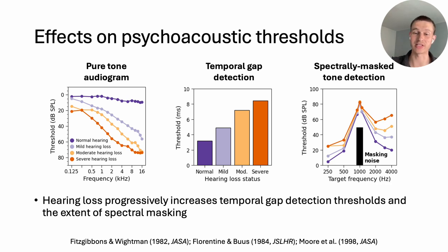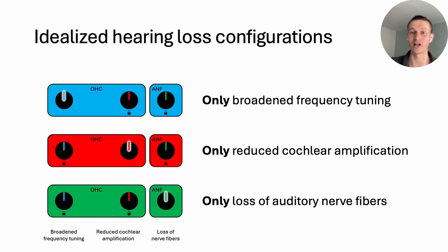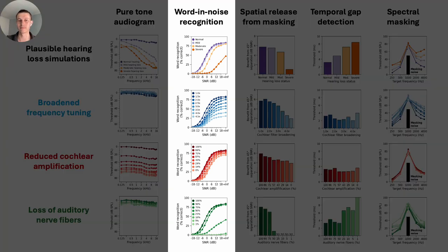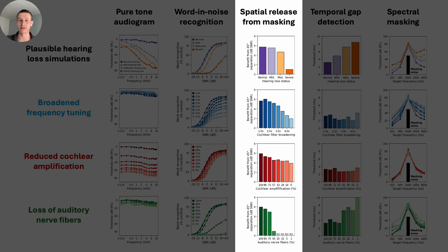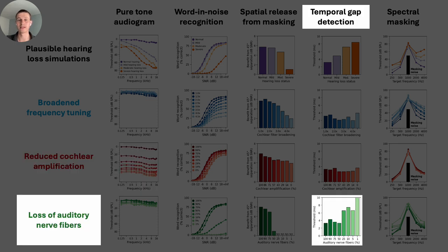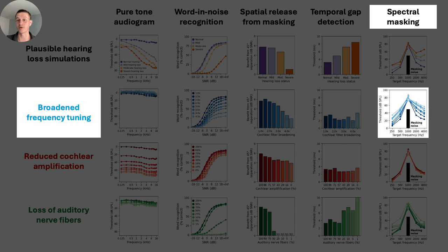To probe what peripheral distortions drive these perceptual effects, we also tested the model with idealized hearing loss configurations by independently turning each of these knobs, creating sets of models with only broadened frequency tuning, or only reduced cochlear amplification, or only auditory nerve fiber loss. We find that all three types of distortions can contribute to poorer speech recognition in noise, and similarly all distortions can potentially reduce spatial release from masking. Psychoacoustics, however, show more distinct perceptual effects: changes in the audiogram are primarily driven by loss of cochlear amplification, while frequency tuning and nerve fiber loss have little effect there. Temporal gap detection is quite selectively sensitive to nerve fiber loss, and spectral masking is most sensitive to changes in cochlear frequency tuning.